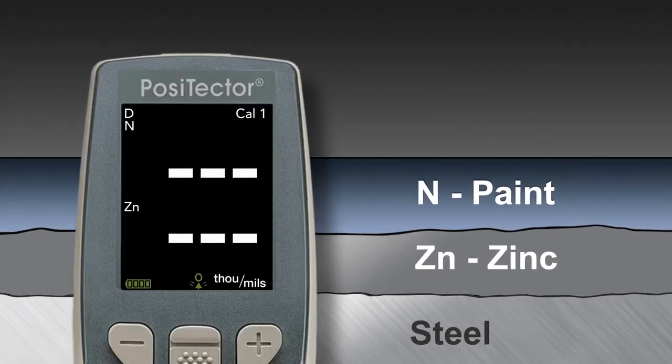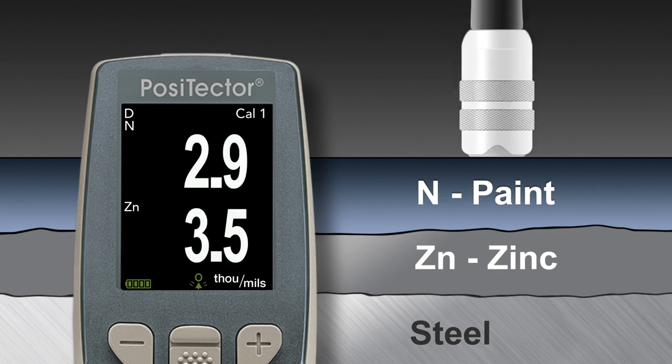The Positector 6000 FNDS duplex probe was specifically designed to measure this coating system with one probe placement, simply and accurately.